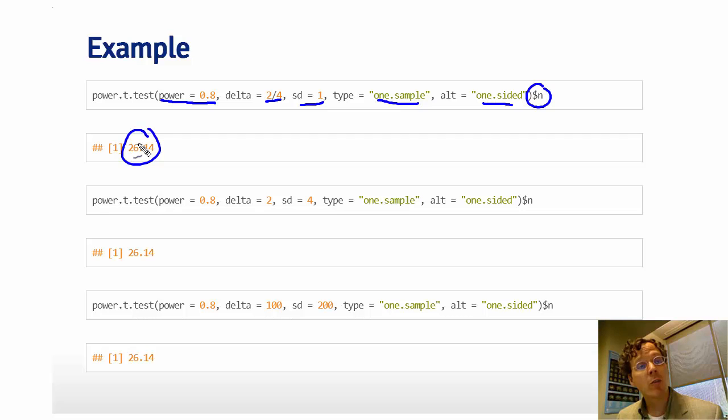So you need a sample of size 27 to have a power of 80% to detect an effect size as large as 0.5. And what I'm showing here is that the calculation is the same as I specify an equivalent effect size of 0.5, whether it's delta of 2 over 4 or delta of 100 over 200. It's always giving me the same number.